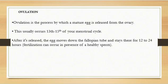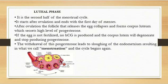After the release of this egg, it travels into the fallopian tube, which is also known as the uterine tube, and it stays there for about 12 to 24 hours. Fertilization may occur during those hours if there is a presence of a healthy sperm. In the absence of a healthy sperm, fertilization is not going to occur.